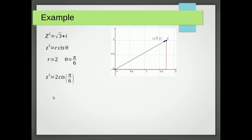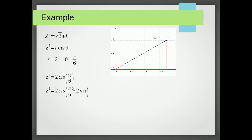So that means I can write the equation as Z squared equals 2 cis(π/6). Now remember we've got to generalise this, because all the argument does is tell us what direction to go in. If we go round another 2π we're still facing in that direction, and another 2π and we're still facing in that direction. So we generalise it by adding 2mπ onto the argument.